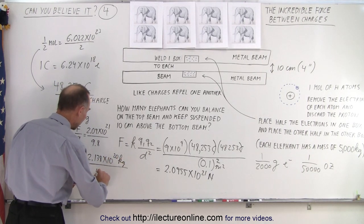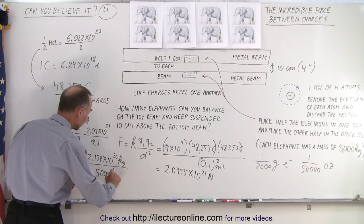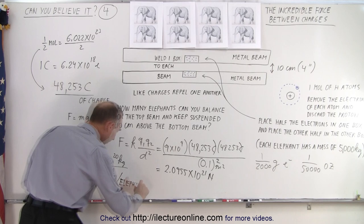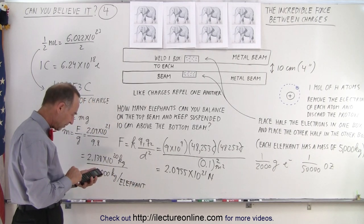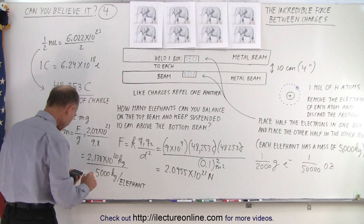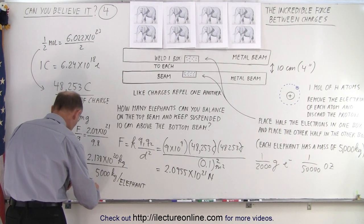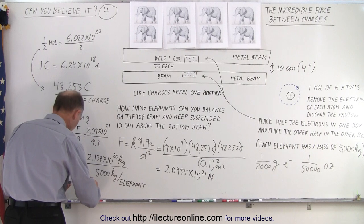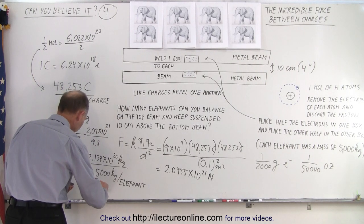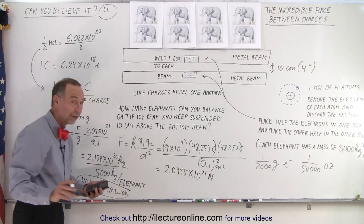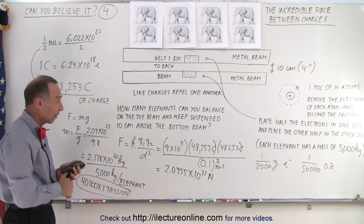Now we're going to divide that by 5,000 kilograms per elephant. So we divide that by 5,000, and we get about 40,000 times 1 trillion. Now, the answer is, and this is the amazing part...